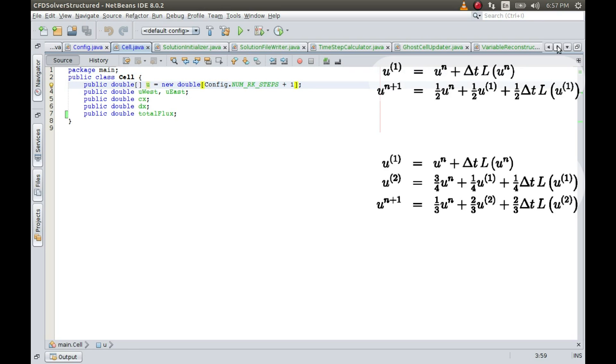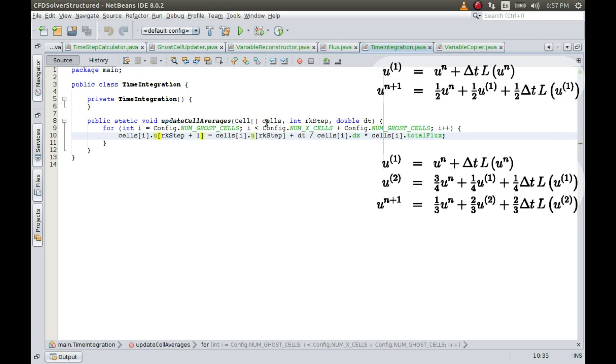This is defined such that for two-step Runge-Kutta method, the value u^n will be stored at array index zero, this value will be stored in array index one, and this value will be stored in array index two.